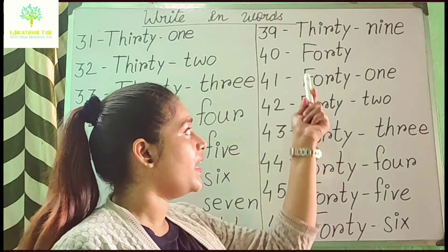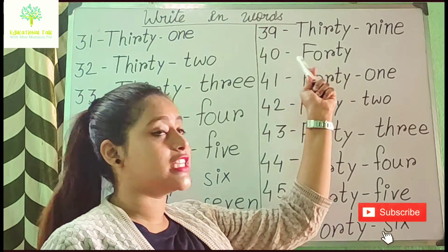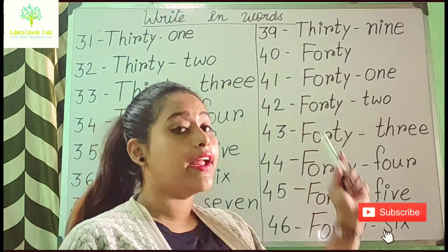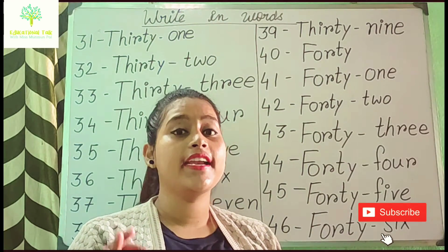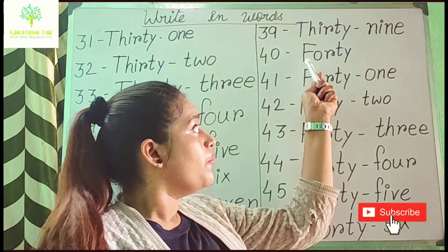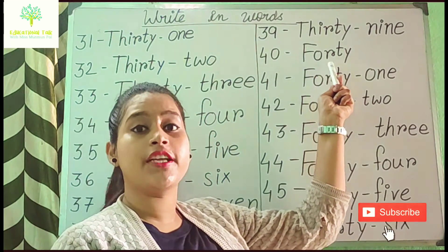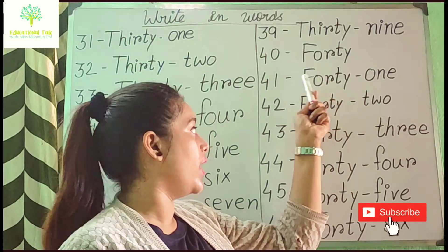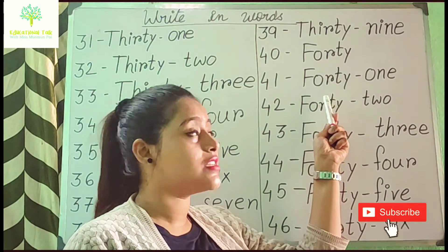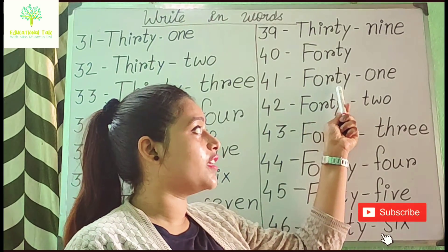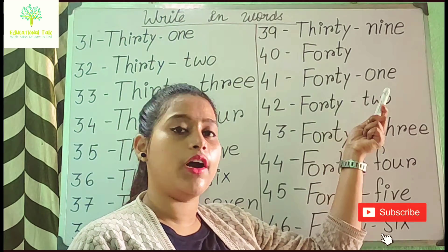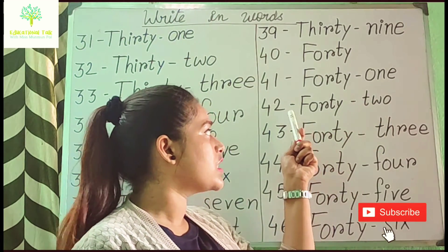For 40, the spelling is F-O-R-T-Y. Don't write F-O-U-R-T-Y — that's wrong. It is F-O-R-T-Y. Remember that one. For 41, write 40 spelling first — F-O-R-T-Y — then 1 is O-N-E, so 41 is Forty-One.